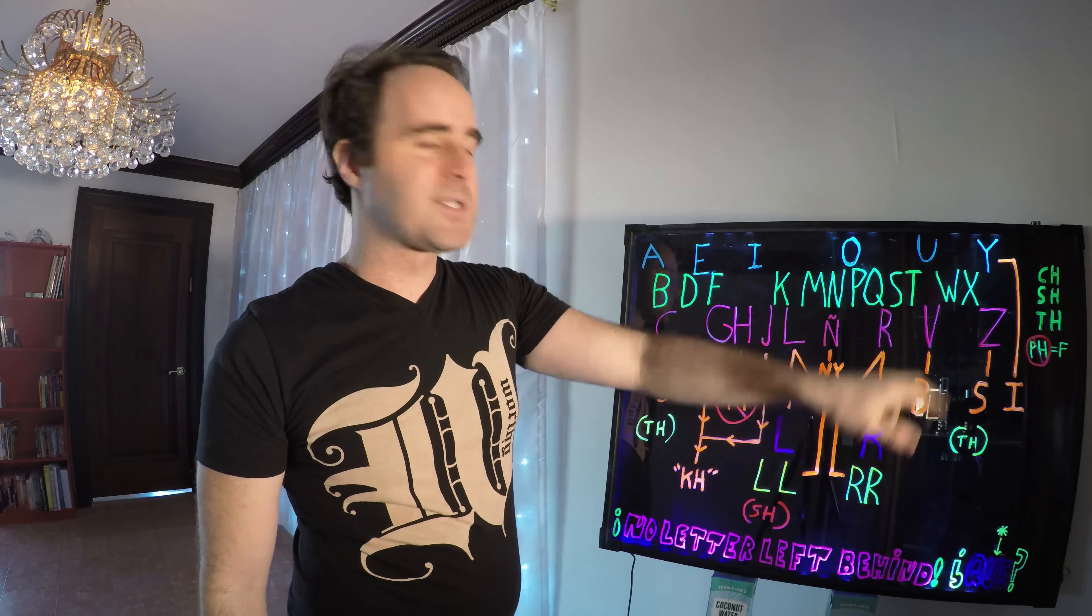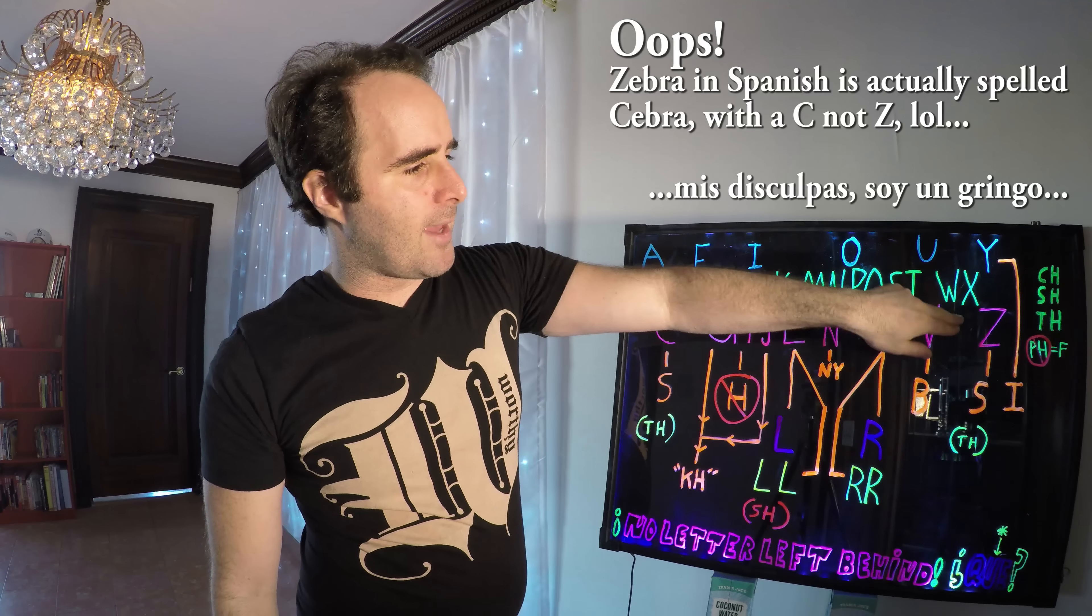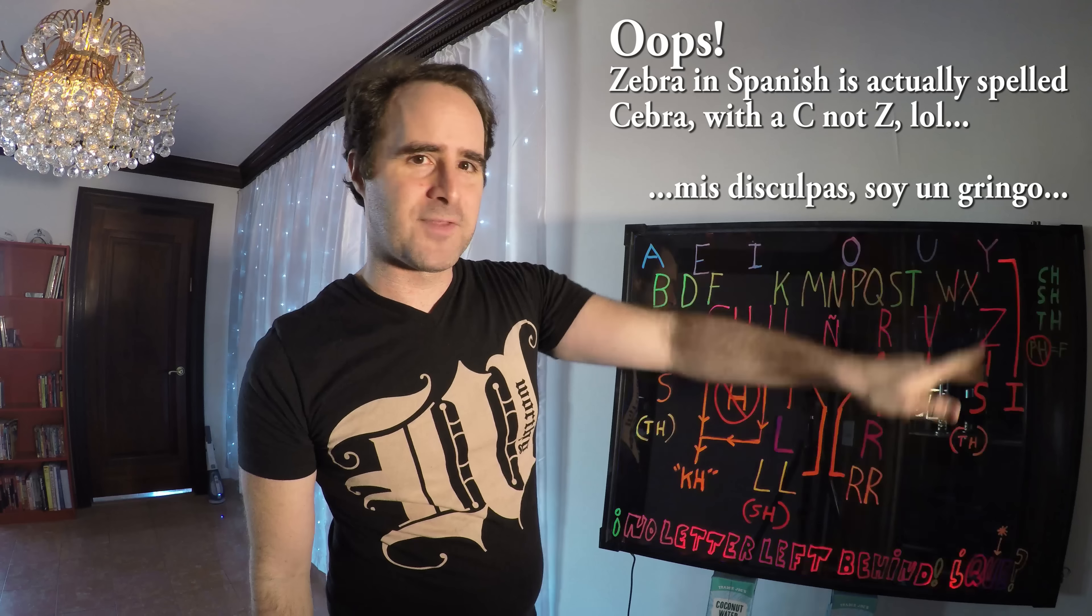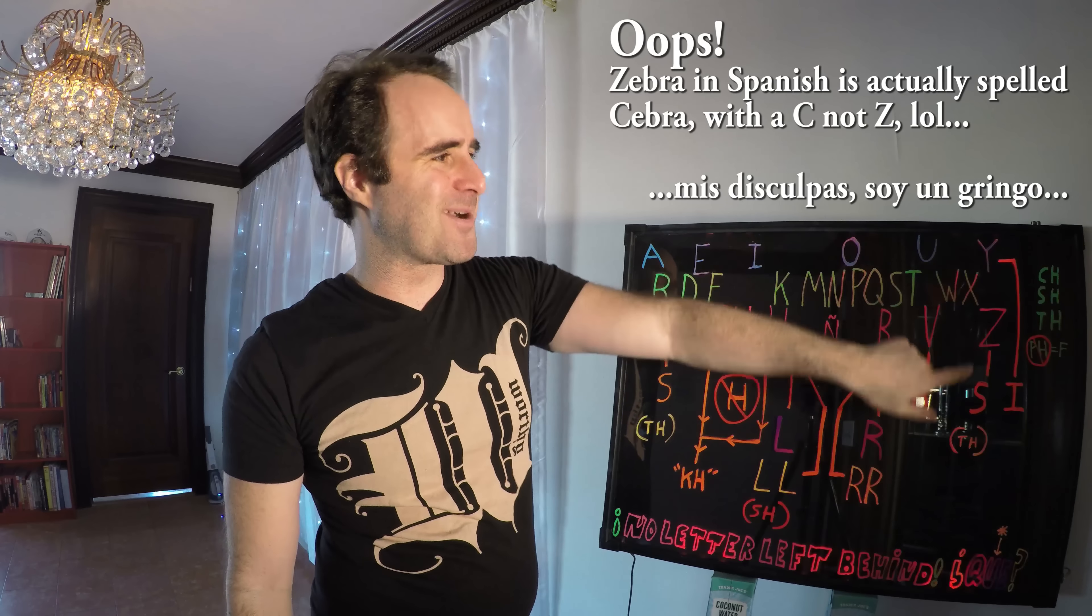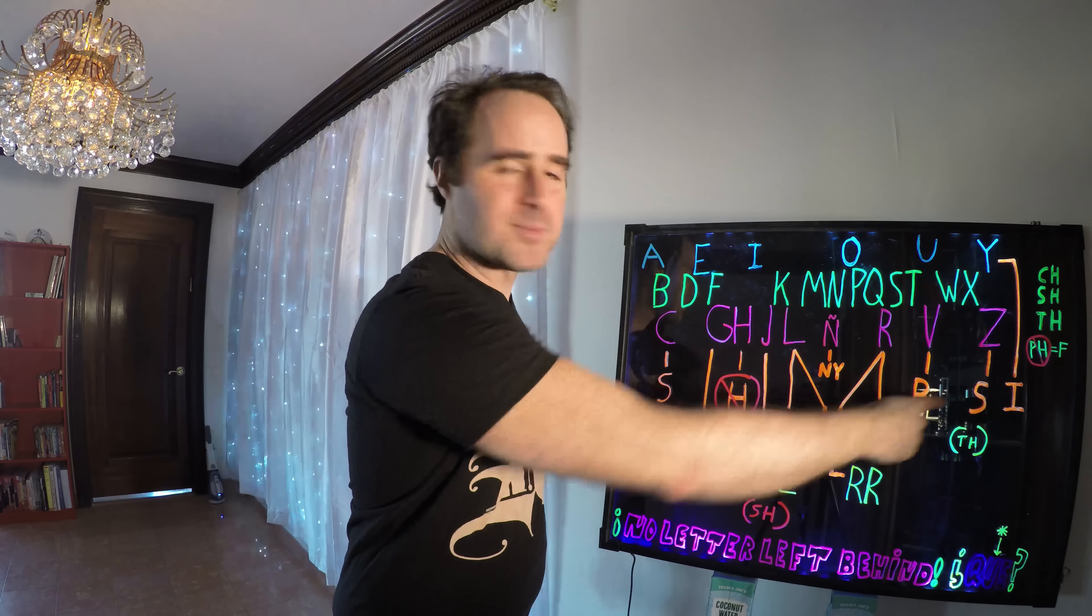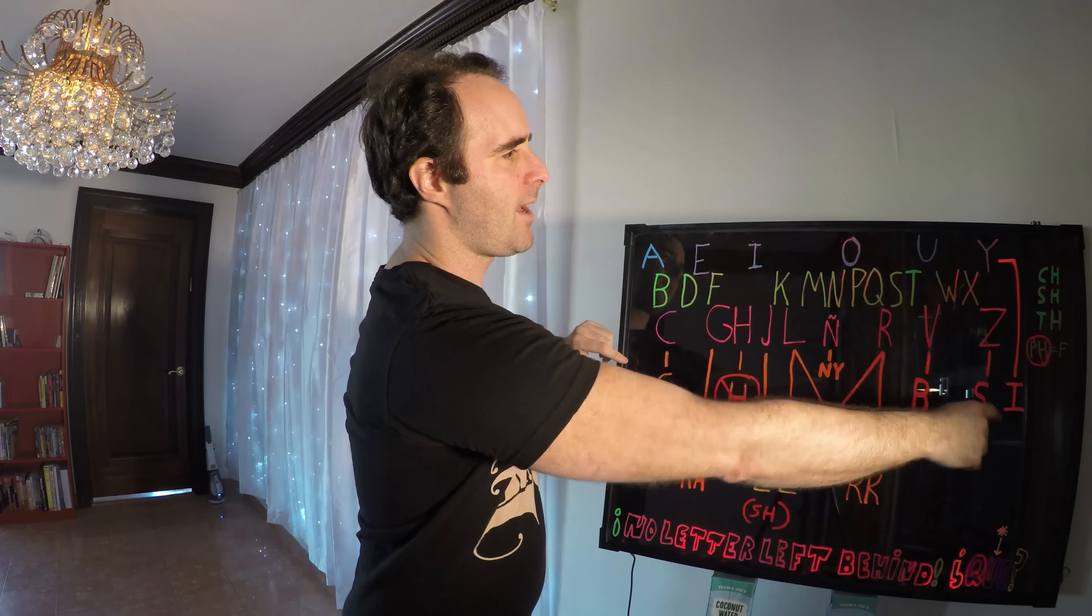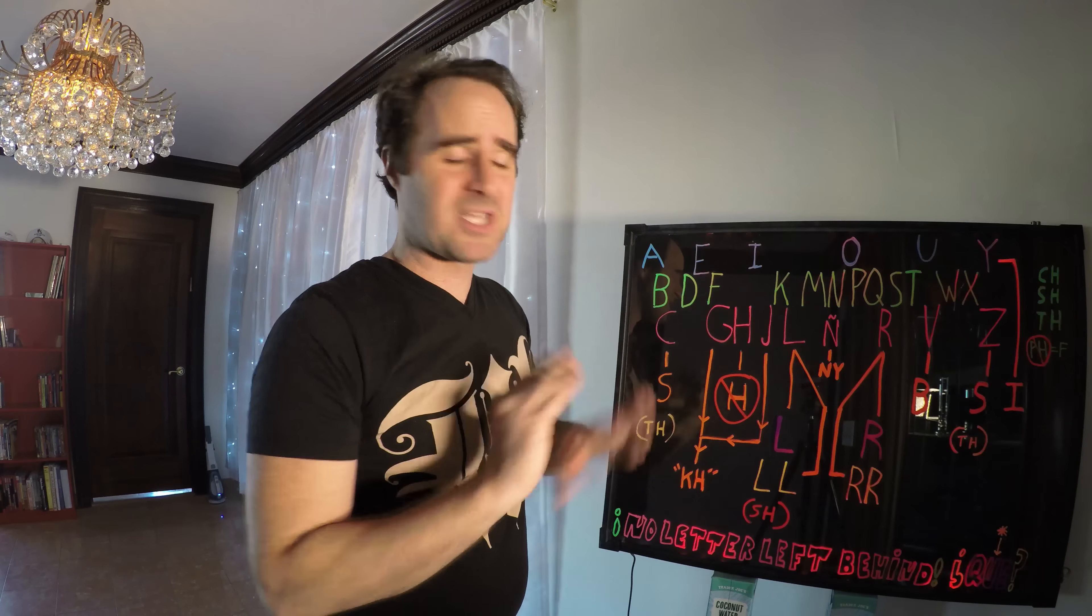Z switches to an S. So zebra, like cebra. And S becomes TH if you're in Spain. So cebra. I don't know if they do that by the way on that word. But cebra, okay, Z. Z if you're British just becomes S. That's it. Same exact sound as the C, the S, and the Z. All three letters, same exact sound.